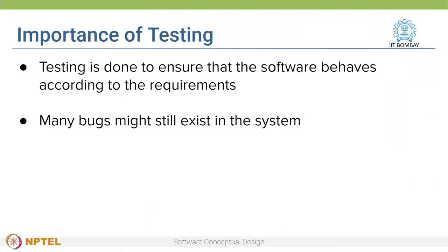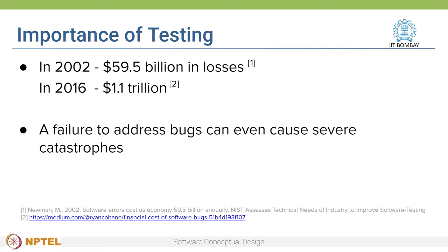After the software system is built, it's necessary that the software behaves according to the requirements. At this stage, testing of the system is done. Testing is important because many bugs or defects can still exist in the system. In a study done almost 20 years back in 2002, it was found that software bugs caused the U.S. economy around $60 billion in losses. In 2016, this number jumped to $1.1 trillion. A failure to address even simple bugs can cause severe catastrophes.